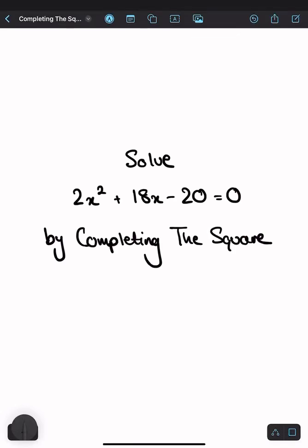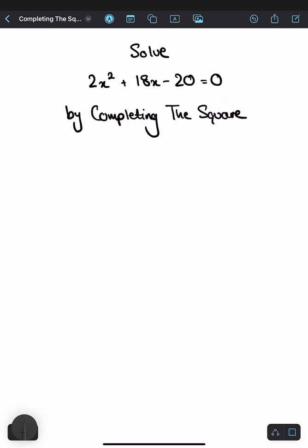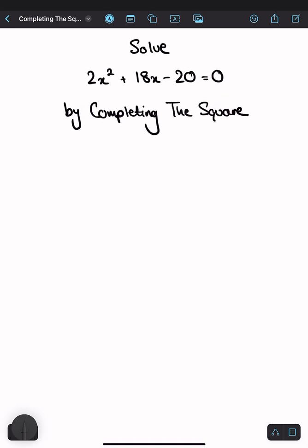Let's solve 2x squared plus 18x minus 20 equals 0 by completing the square. Most people hate this method of solving equations, but hopefully by the end of this, you won't find them too bad.